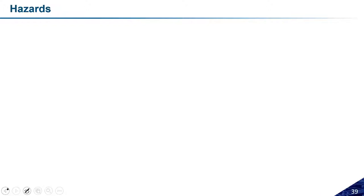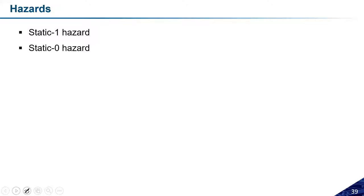There are basically three kinds of hazards: the first is the static-zero hazard, the second is the static-one hazard, and the third is the dynamic hazard. Let us try to differentiate these things; I will explain in more detail with the help of circuits.